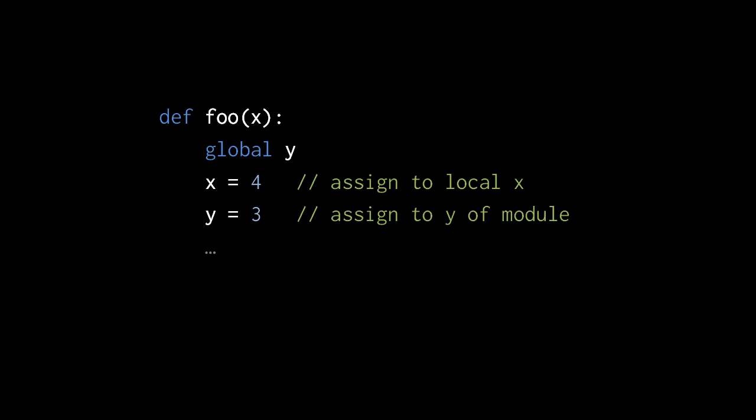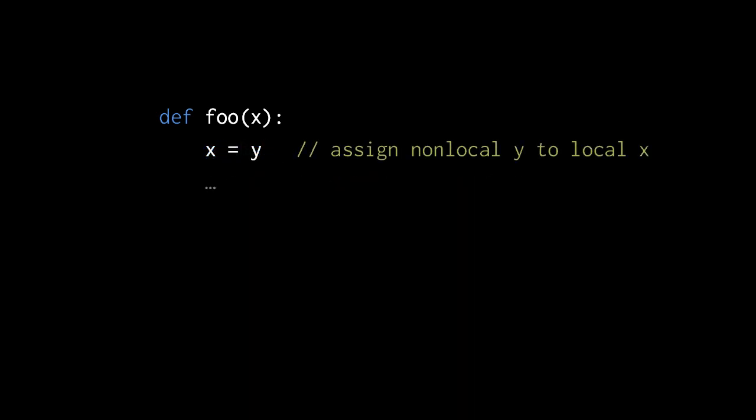In cases where you just need to use a non-local variable, you don't need to declare that variable as non-local — you can just use it. As long as you don't assign to a variable of that name in that function, Python understands that it's not local. So here in this function, if you write y assigned to x, x is local but y isn't, as long as there's no y being assigned to in this function.